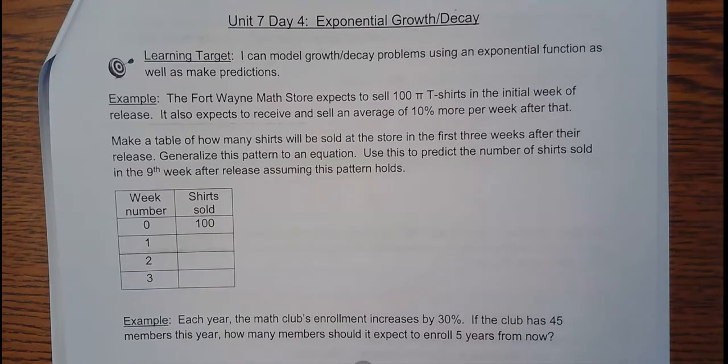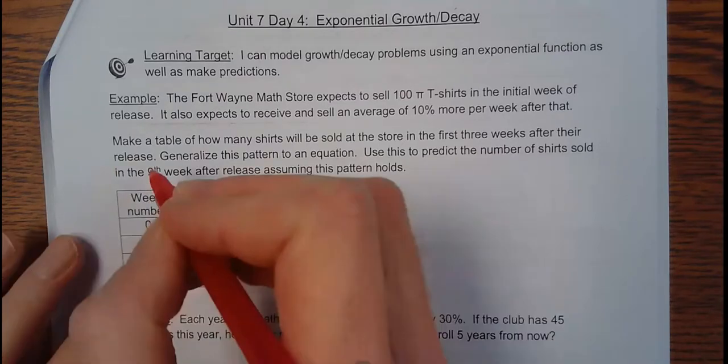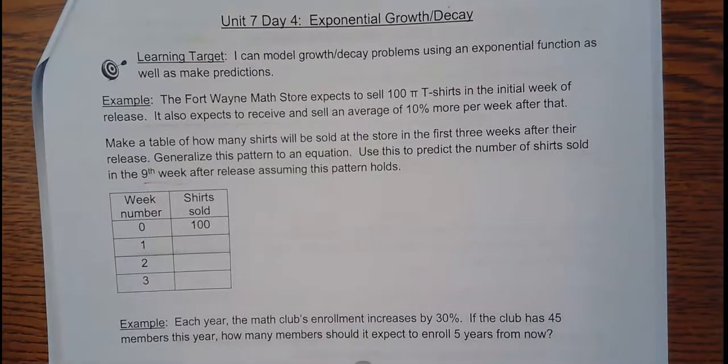The Fort Wayne Math Store, pretty popular store, expects to sell 100 pie t-shirts in the initial week of its release. It also expects to receive and sell an average of 10% more per week. So, every week, it's going to sell 10% more than the previous week. We need to make a table of how many shirts will be sold at the store in the first three weeks. Then, we want to look at the pattern and make an equation out of it, which is what we did before on day one.